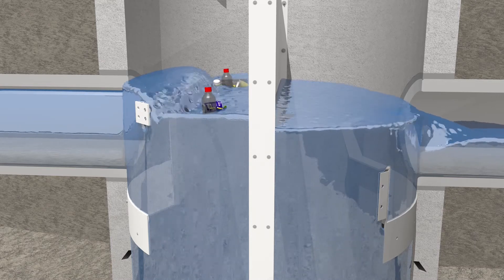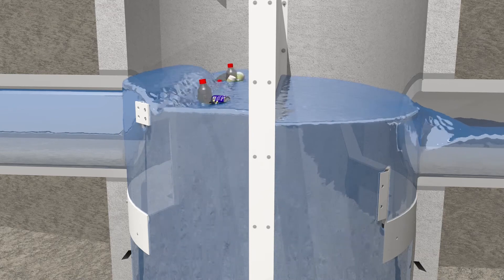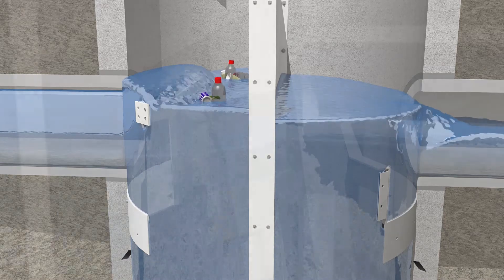During higher than normal flows, water passes over the splitter without bypassing the oil skimmer, retaining oils and floatables.